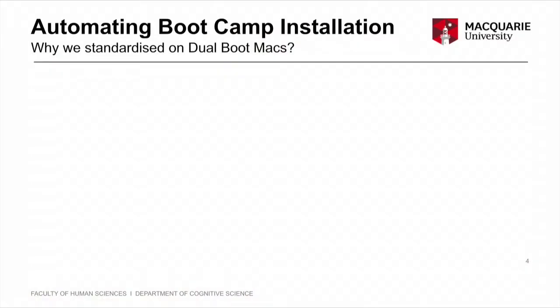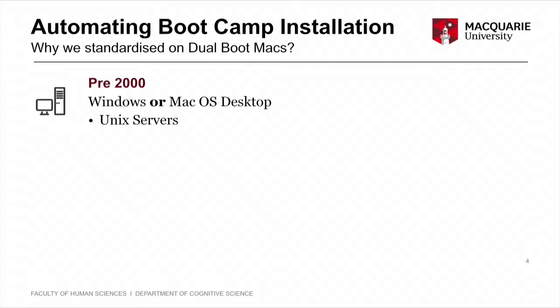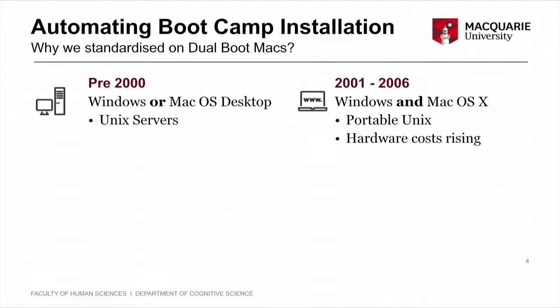I've been here for a long time. In the early days, people tended to have a Windows or a Mac computer. They weren't that powerful, so all their heavy lifting was done on Unix servers. As things moved on, people started to have both a Windows and a Mac computer on their desktops. With OS X being a portable Unix, demand on Unix servers dropped, though hardware costs went up quite dramatically. Everything changed when the Intel Mac came out.